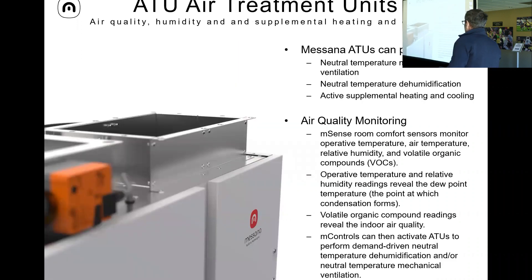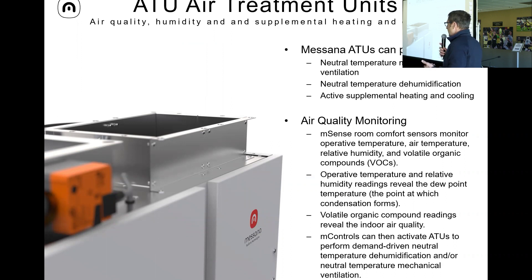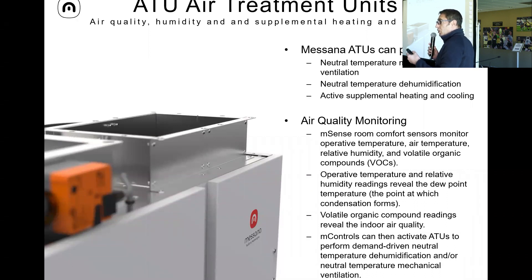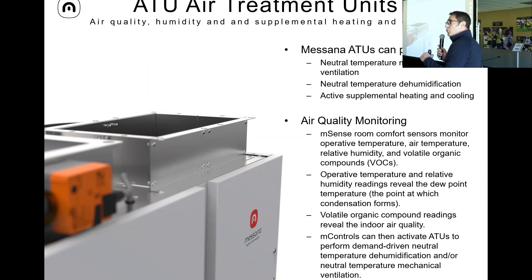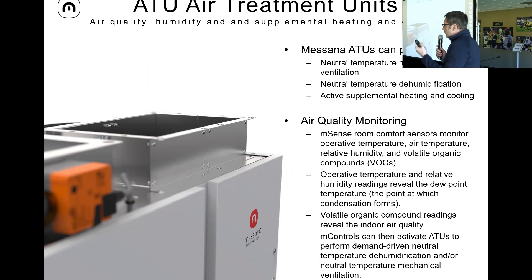The last ingredient in the radiant cooling recipe is controlling the air — specifically, controlling the humidity. Not just to prevent condensation, because that's handled by the control system, but if humidity is elevated we cannot drop the temperature of the ceiling. We can activate the dehumidification system to drop the dew point temperature, which allows us to drop the temperature in the panel, getting more BTU from the panel and using it more versus the fan coil. So we developed an ATU — an air treatment unit — that integrates with our control.